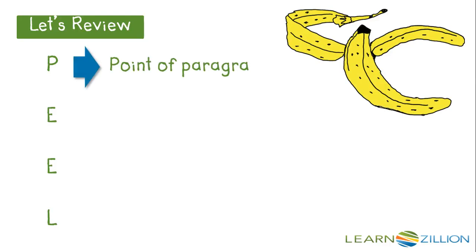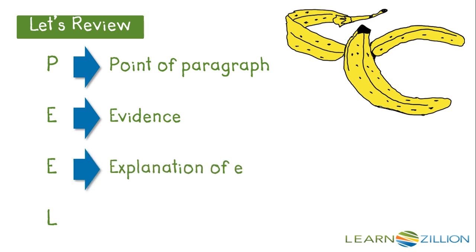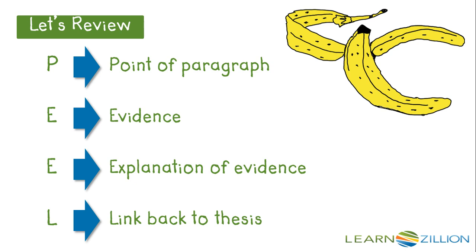P stands for Point of paragraph. This is your topic sentence, so you want to make sure that you identify the main argument of each paragraph, which supports your thesis. The E stands for Evidence — you use textual evidence that you located in the planning and generating phase of the writing process. The other E stands for Explanation of evidence; at this stage you are evaluating and explaining the textual evidence you just presented. Finally, the L stands for Link back to thesis — you want to make sure that each piece of evidence connects back to the overall purpose of the paper.